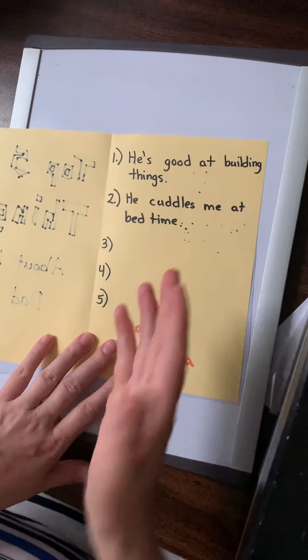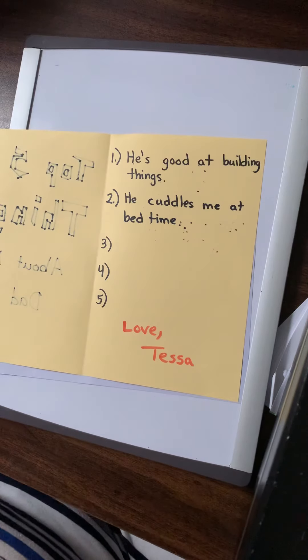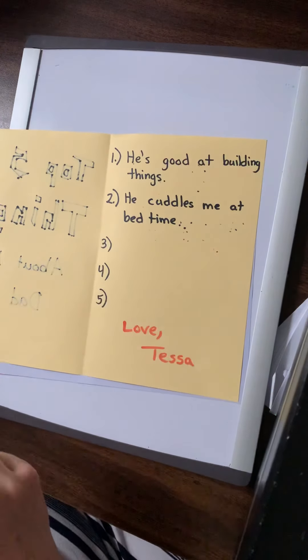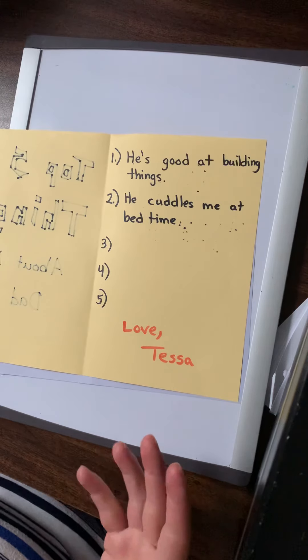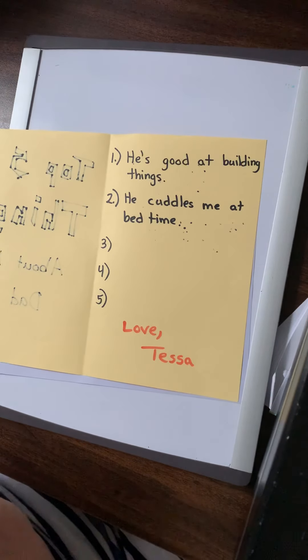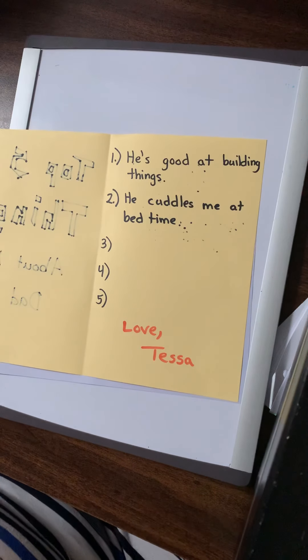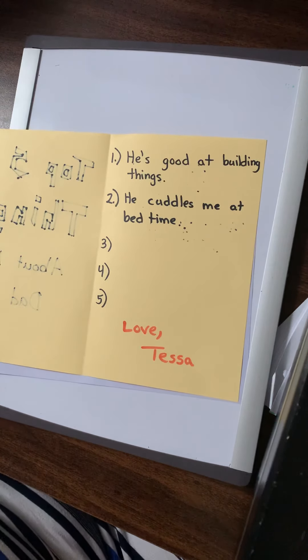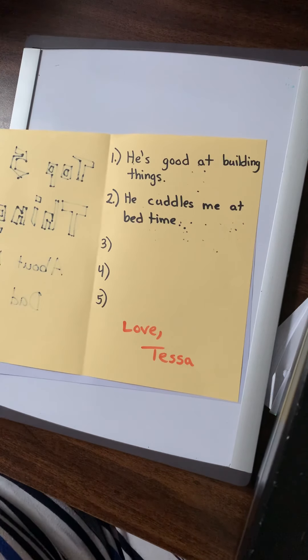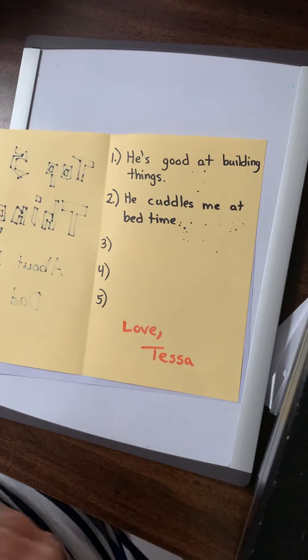So I mean we just came up with two ideas so far. I don't want to give you all the ideas because this is about your dad. He's good at building things. He cuddles me at bedtime. He reads me books. He buys me things. He fixes things. He mows the lawn really well. He barbecues. He goes on bike rides with me. He takes me on a vacation. Like whatever you can think.